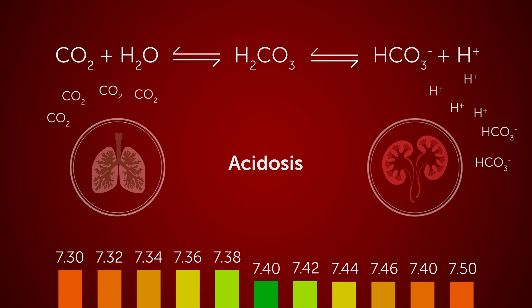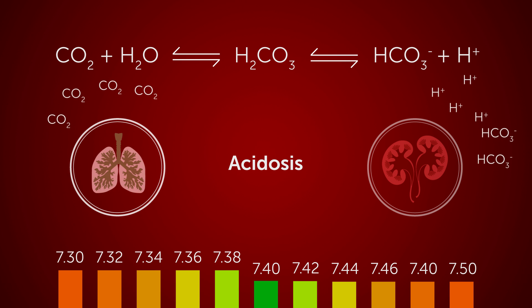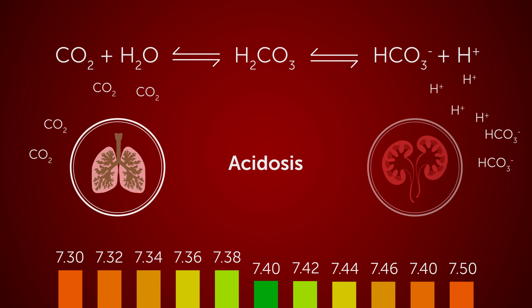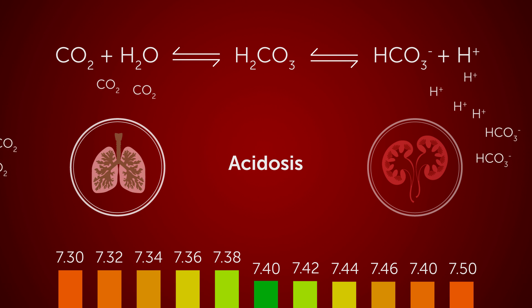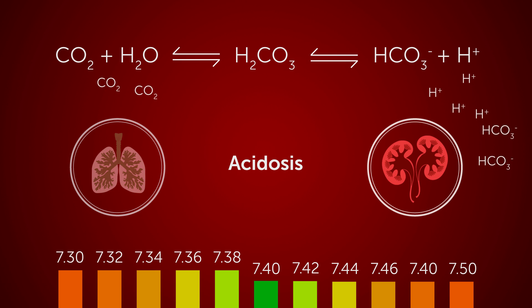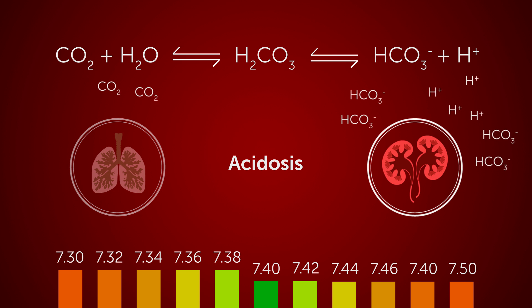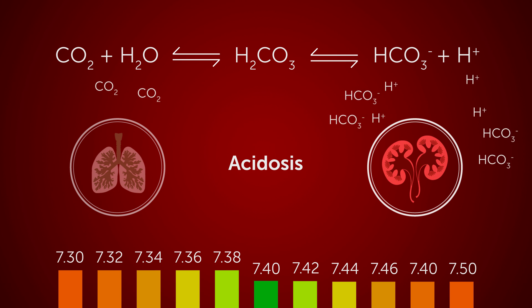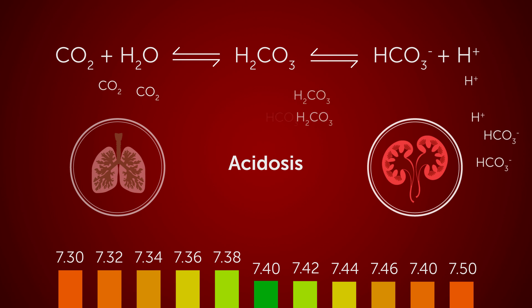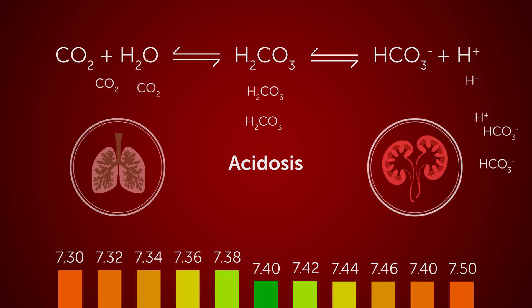To compensate for acidosis, lungs can perform hyperventilation, exhaling more CO2 to blow off acid, or the kidneys can increase HCO3- output, shifting equilibrium to the left to reduce H+ in the blood.